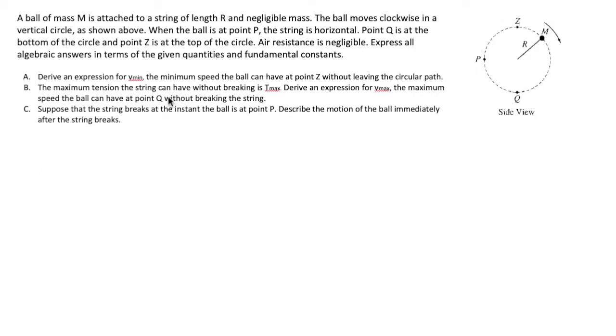The maximum tension the string can have without breaking is t_max. We must derive an expression for v_max, the maximum speed at point q without snapping the string. Finally, once you've got those two, suppose that the string breaks at the instant the ball is at point p. Describe the motion of the ball immediately after the string breaks.